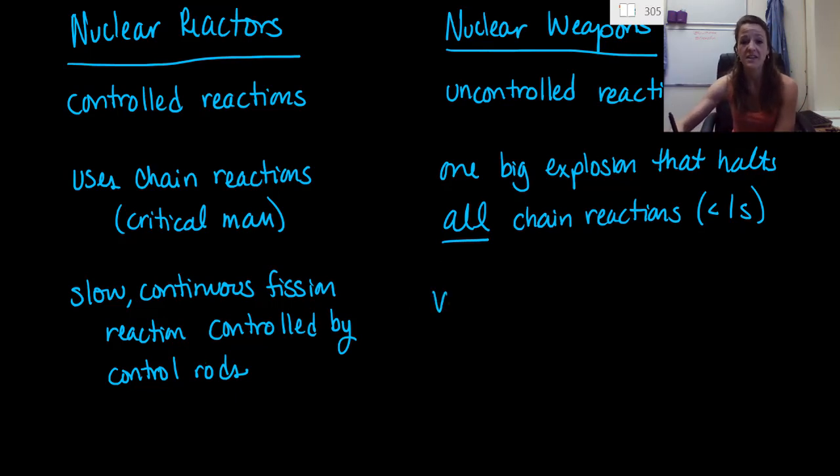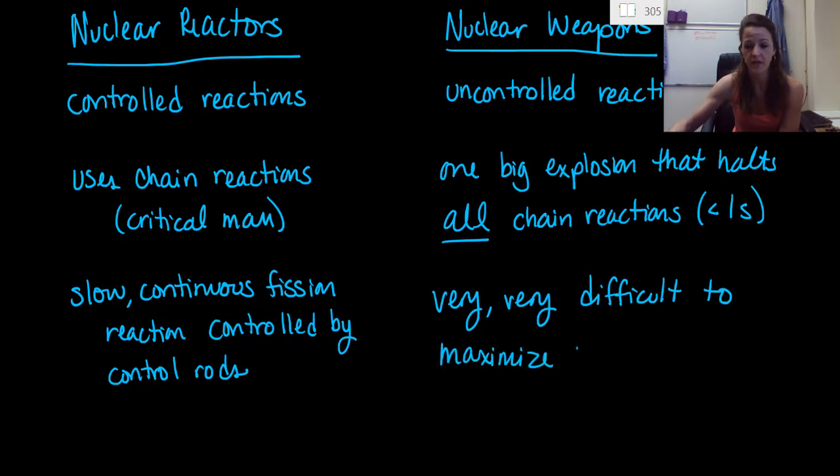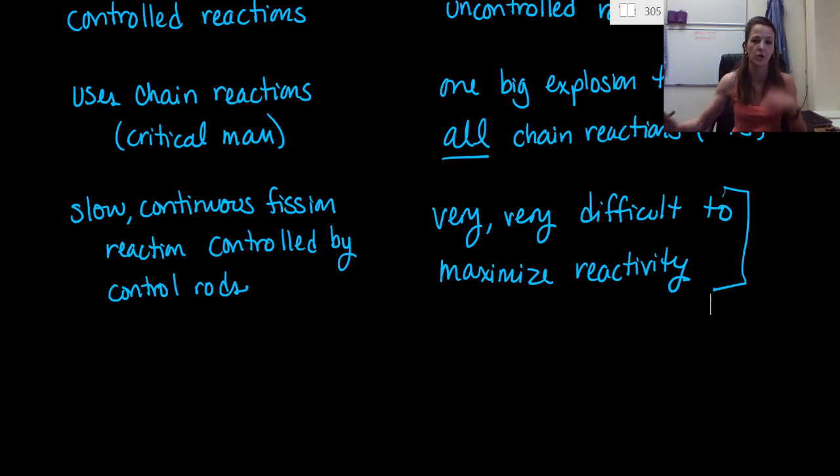Now, for a nuclear weapon, it is very, very difficult to actually maximize reactivity. And so this is a big thing that people just kind of glaze over, or they don't remember when people teach them, or maybe they just never heard this. But for a nuclear weapon, it's really hard to make those chain reactions occur. It's very, very hard. I don't like using the word impossible in science, but I would say it's almost impossible to control that and to actually maximize this reactivity just because of the way these processes occur. So we just want to make sure that's very clear in our brains.